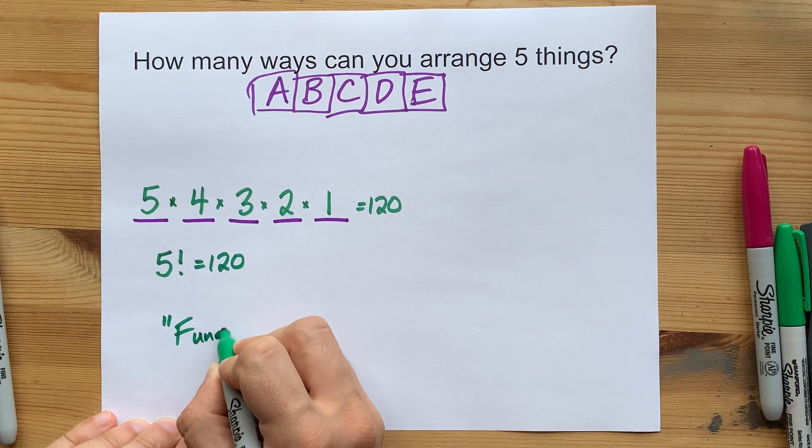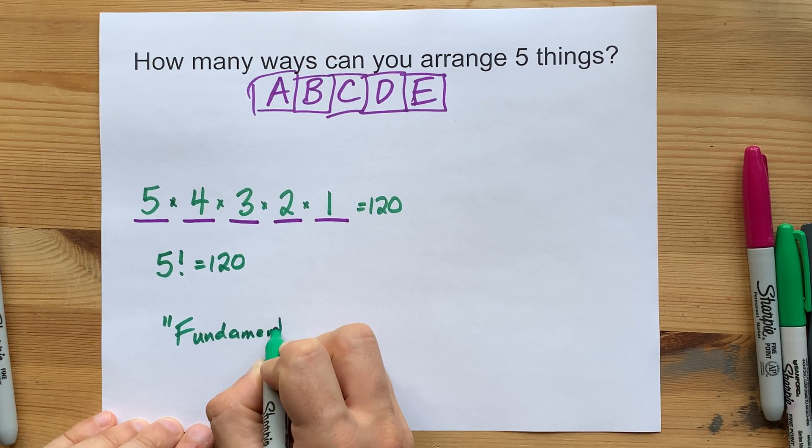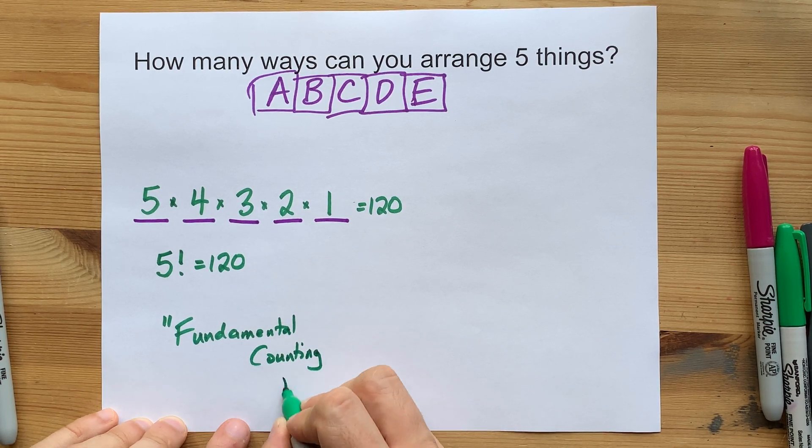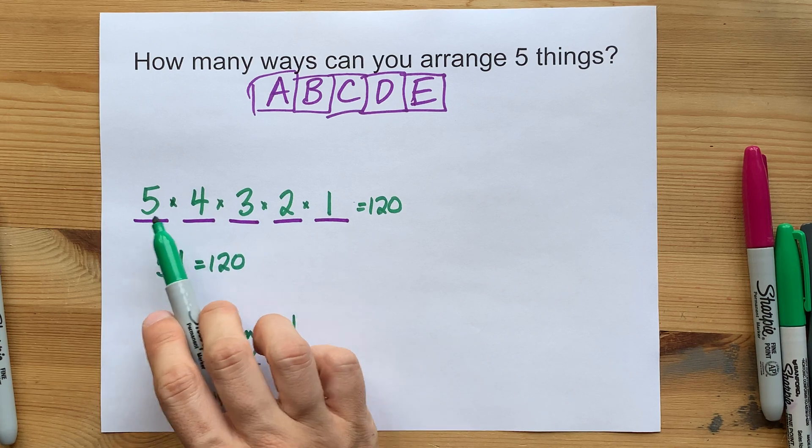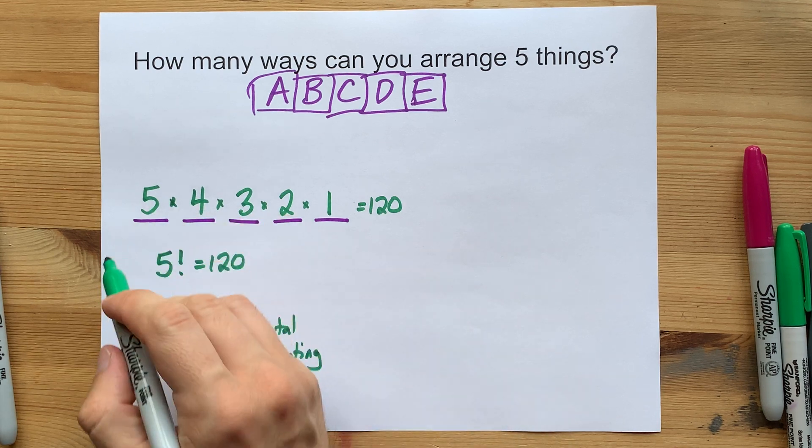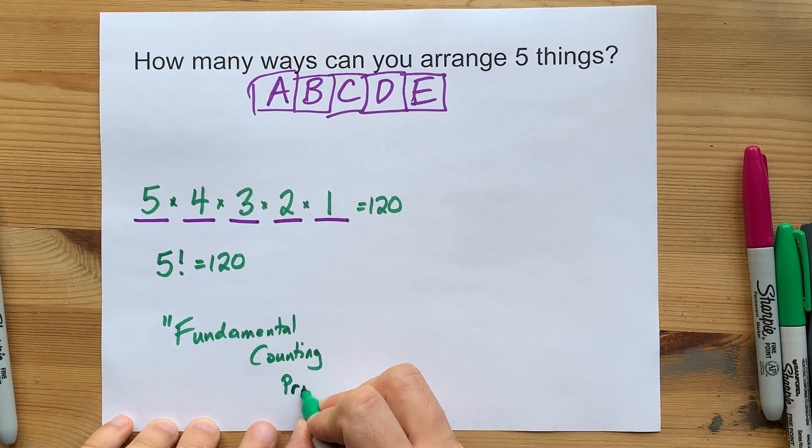And by the way, this method has a special name called the fundamental counting principle. It's the idea that if you can figure out how many options you have for each of the spaces you're arranging things into, you can just multiply the number of options by each other.